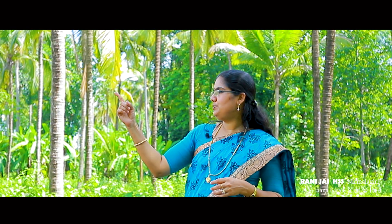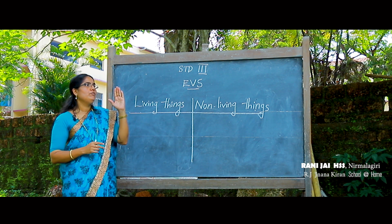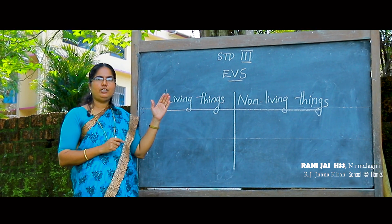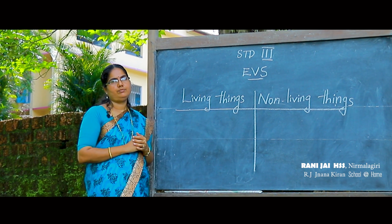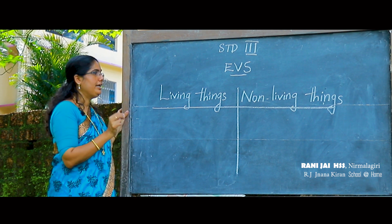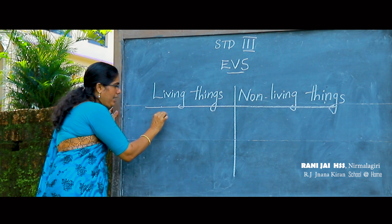Now look at this picture and find out which one is a living thing and which is a non-living thing. Find out from this box. Observe it carefully. Rabbit — yes, very good. Rabbit is a living thing.